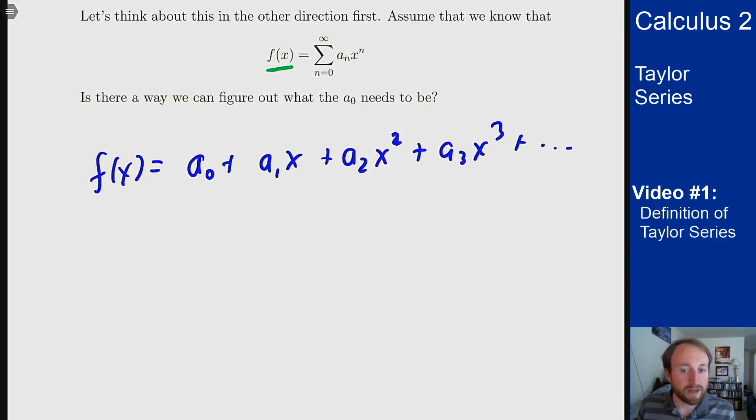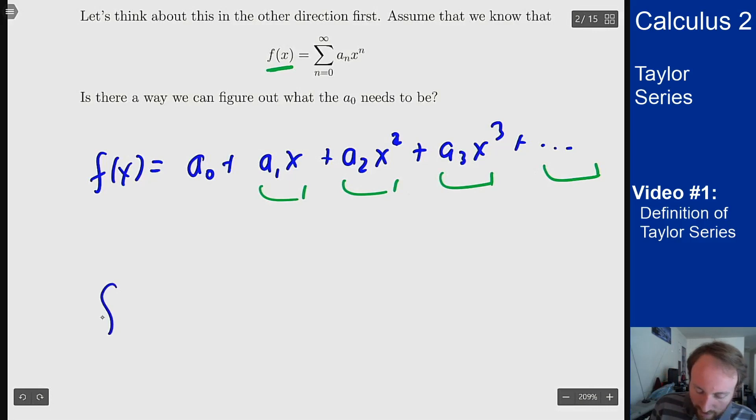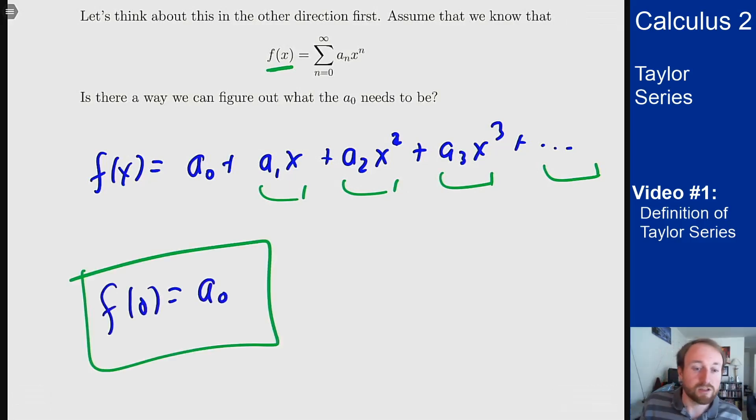What happens if I plug in zero? Well if I plug in zero all of the terms with x's in them will all just go away and every term beyond has more x's in it. So if I plug in zero we'll get that f of zero is just a_0. That means just from this idea I can use the function that I know this converges to to tell me what a_0 should be.